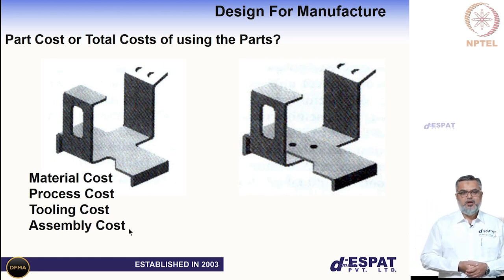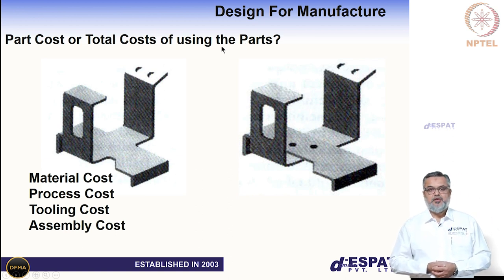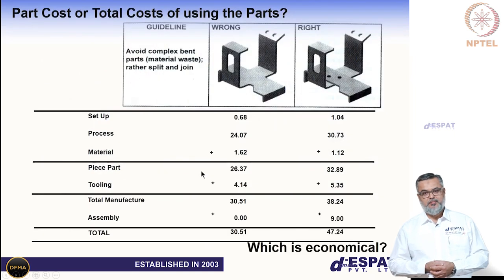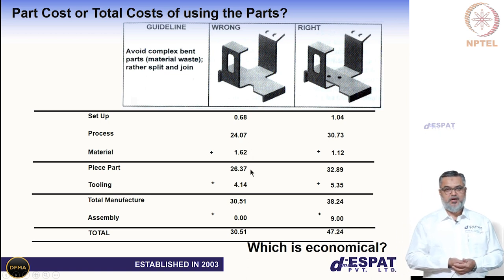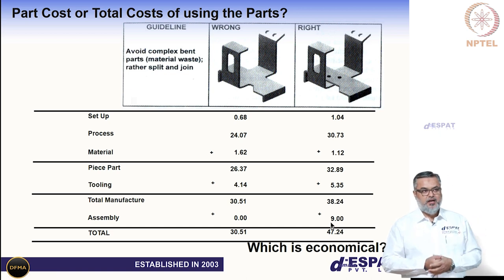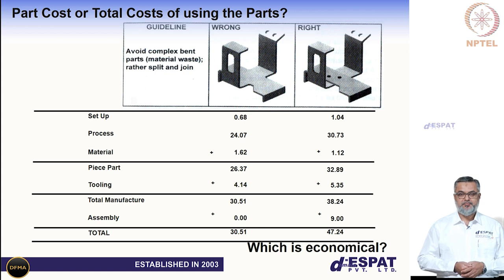Here is a question to think through: what is more important for product design — the cost of an individual part, or the total cost of using parts to achieve a functionality? If we do a scientific analysis using the Design for Manufacture method, you may be surprised. The part marked as 'wrong' has higher material cost, but it wins on other manufacturing cost attributes. The 'right' design requires further assembly, which adds to the total cost — making the supposedly wrong design more economical overall.